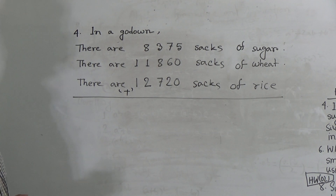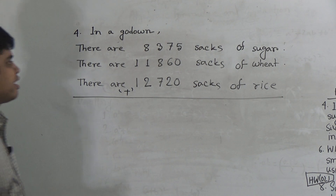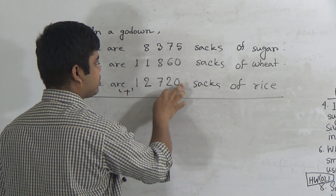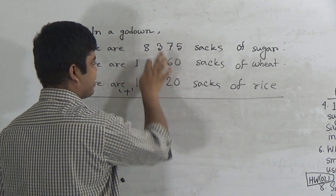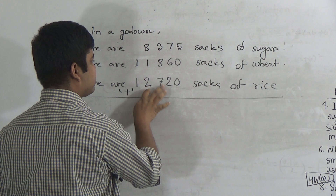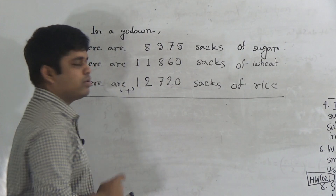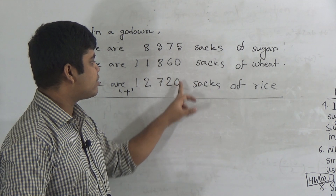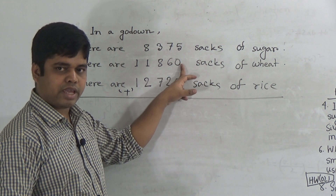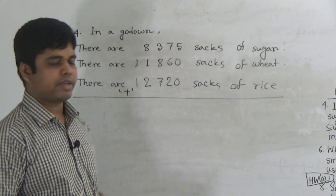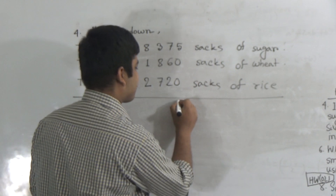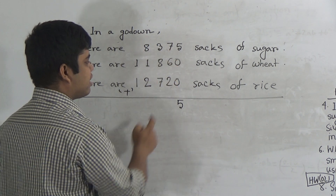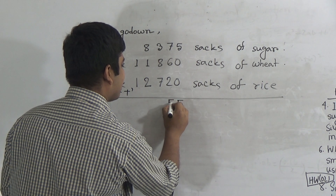We know how to do addition, but for your better understanding, I repeat this again. 5, 0, 0 is in the ones place. 7, 6, 2 is in the tens place. 3, 8, 7 is in the hundreds place. 8, 1, and 2 is in the thousands place. And 1 and 1 is in the ten-thousands place. At first, we do addition of the ones place: 5 plus 0 is 5, plus 0 is 5. Now we do addition of the tens place: 7 and 6 is 13, plus 2 is 15. From 15, I write here 5, carry 1.